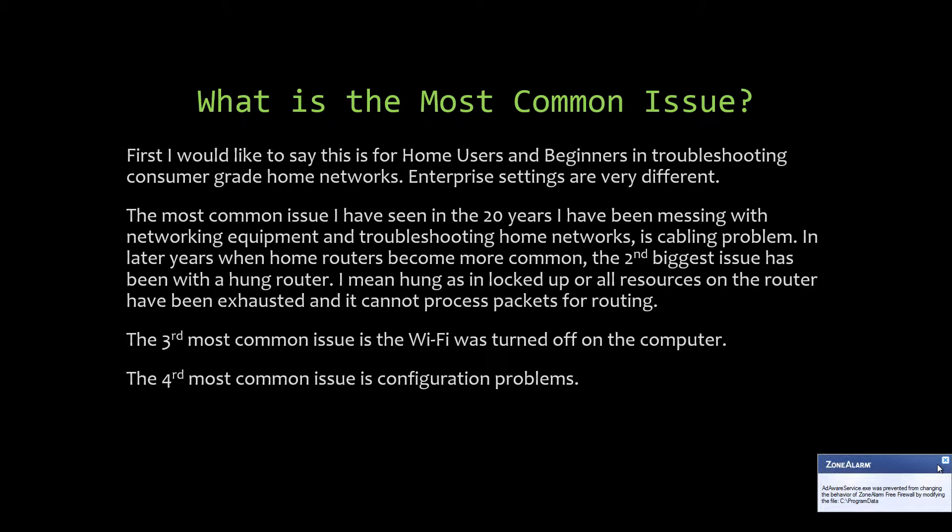The most common issue I've seen in the 20 years I've been troubleshooting home networks is a cabling problem. In later years, the second biggest issue has been a hung router — where all resources are exhausted and it can't process packets anymore. The third most common issue is Wi-Fi turned off on the computer, very common with laptops. The fourth is configuration problems.